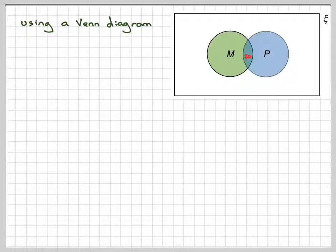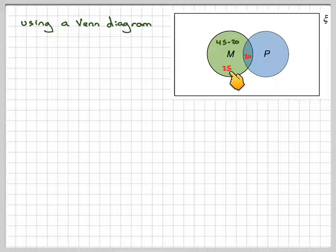If we use a Venn diagram, that might be a bit more clear. So what we've got here is an intersection. We've got 20 studying both. How many study maths only? Well, there were 45 that studied maths altogether minus the intersection, which means 25 studied maths only.